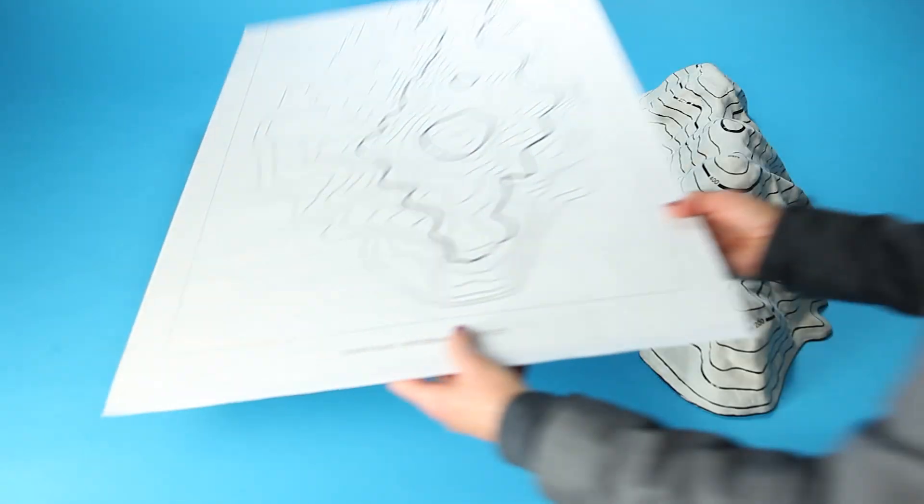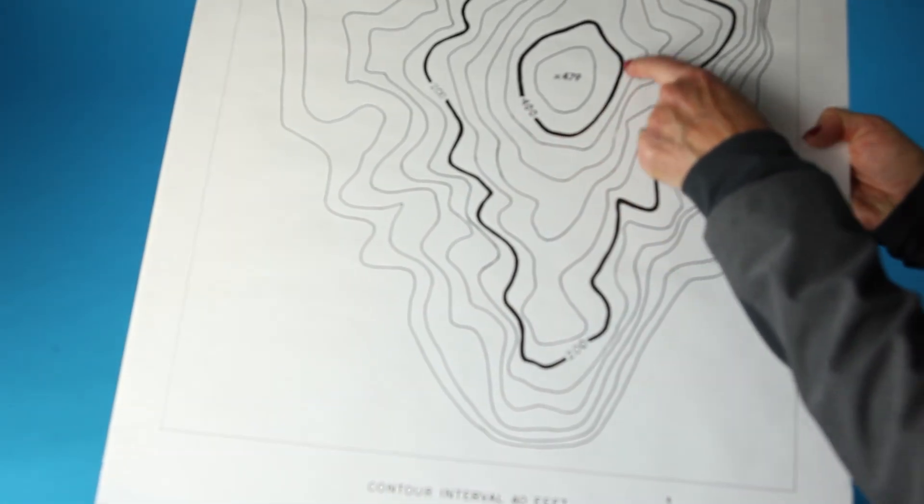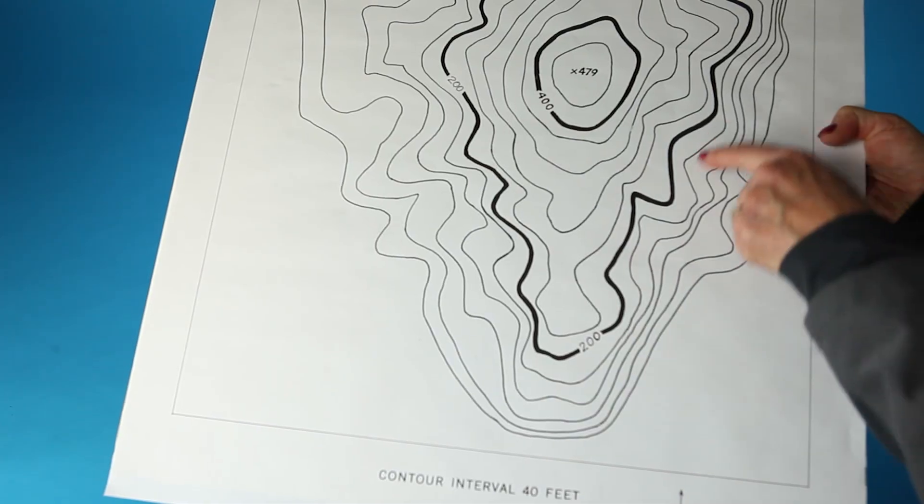Some contour lines are drawn thicker than others. Those are called index contour lines and are labeled with the elevation.